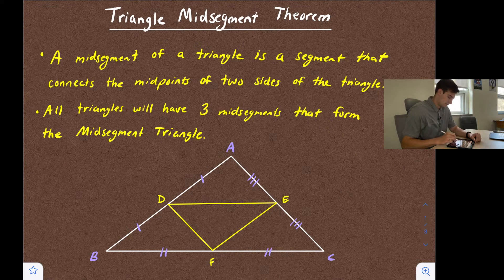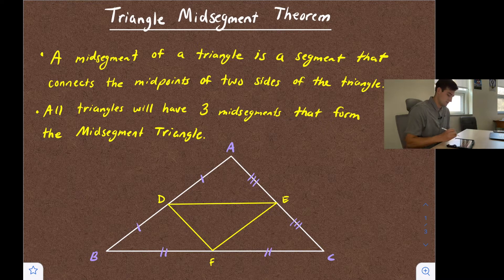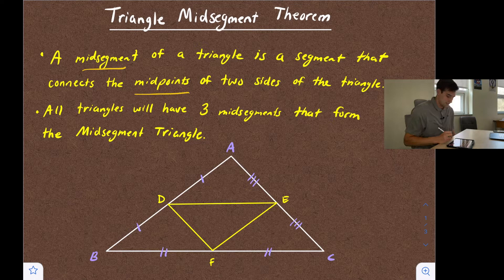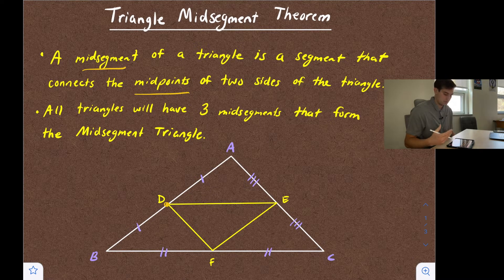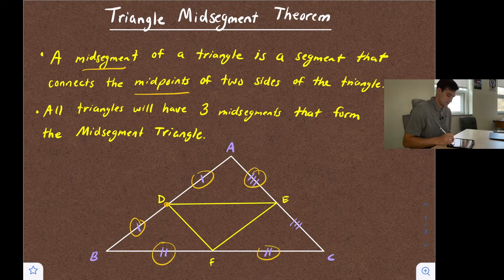Looking at this diagram, we have a big triangle, triangle ABC, and we have mid-segment triangle DEF. The mid-segment triangle consists of the three mid-segments. Vertex D creates sides AD and DB which are congruent, so it's bisecting that side. All three sides of the big triangle are being cut in half, which is why we see tick marks showing those segments are congruent.